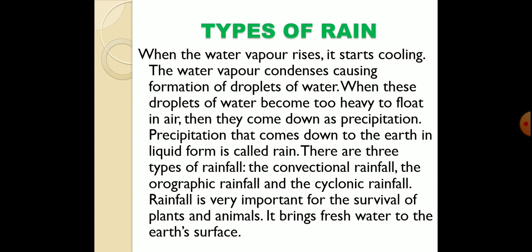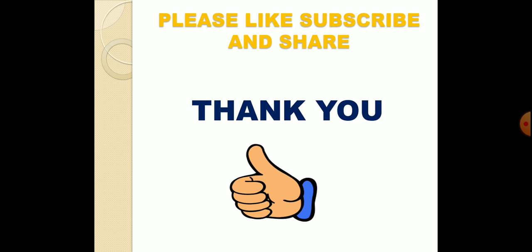When water vapor rises, it starts cooling and condenses, causing the formation of water droplets. When these droplets become too heavy to float in the air, they come down as precipitation. Precipitation that comes down in liquid form is called rain. There are three types of rainfall: convectional rainfall, orographic rainfall, and cyclonic rainfall. Rainfall is very important for the survival of plants and animals as it brings fresh water to the Earth's surface and frees us from drought. Thank you for watching — don't forget to like, subscribe, and share.